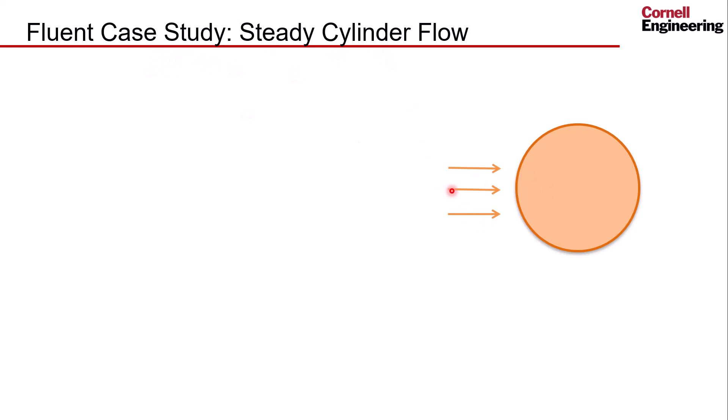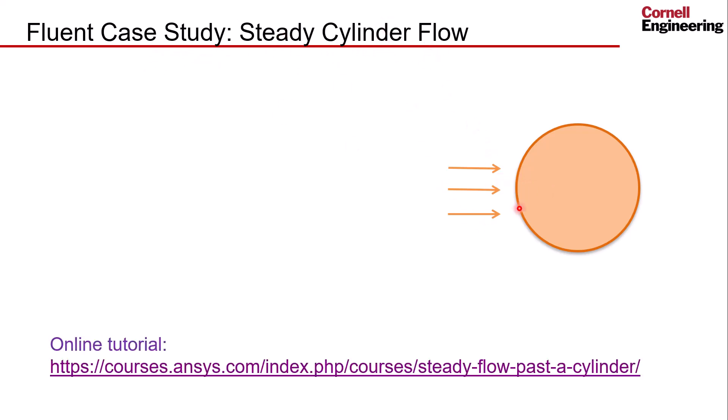So this is a Fluent case study, steady cylinder flow, and it's from a tutorial contributed by Cornell to courses.ansys.com. We will pick a Reynolds number of 20, which is in the steady cylinder flow regime.